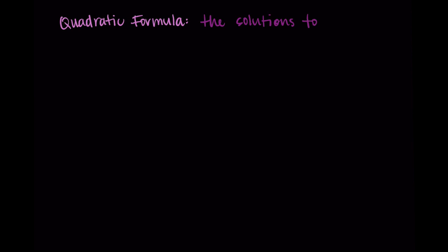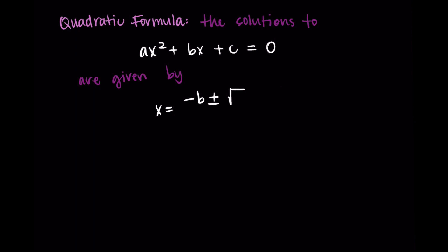You may have seen the quadratic formula before, but let me remind us of what it is. The quadratic formula tells us that the solutions to the equation ax squared plus bx plus c equals zero are given by: x equals negative b plus or minus the square root of b squared minus 4ac, all over 2a. The plus or minus gives us two solutions — we do the plus as one solution and the minus as the other.